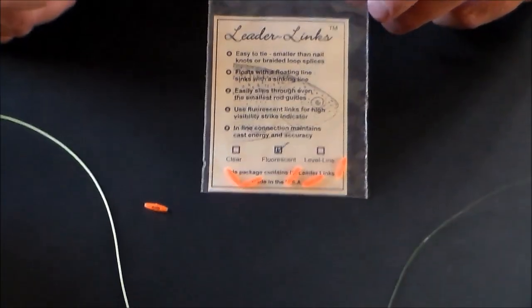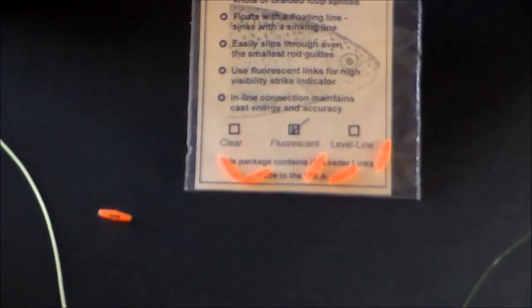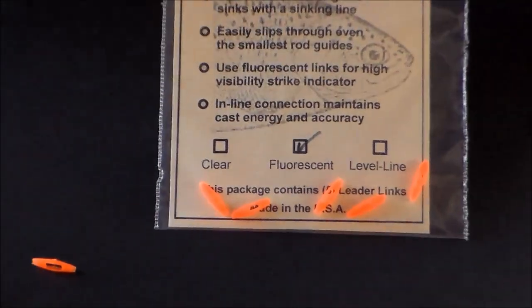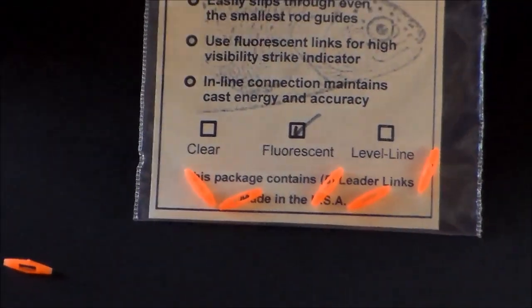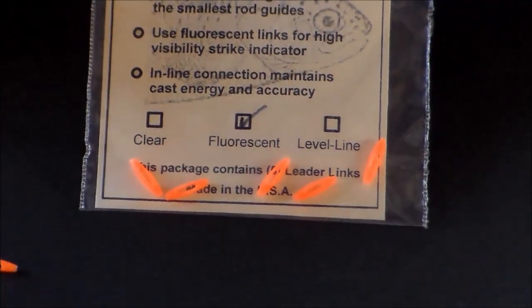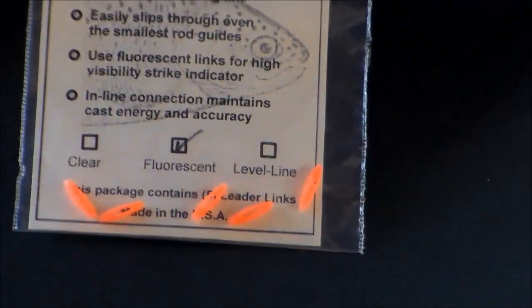These orange links are fluorescent orange. They're used secondarily as a strike indicator. You can get clear links or level line. Level line is a little bigger for a larger fly line.